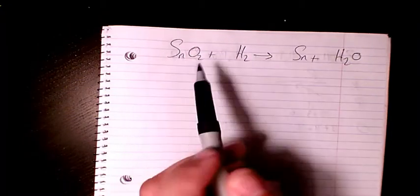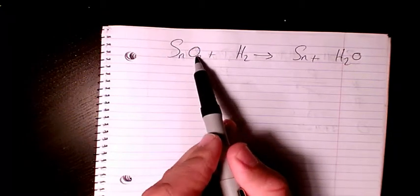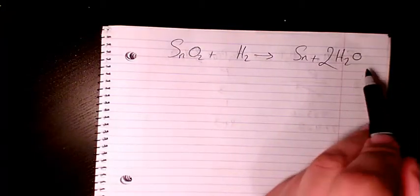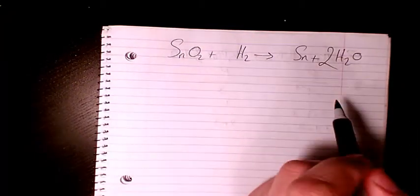We have one here and one here, so that's balanced. What about oxygen? We have two of oxygen, so I need to put two here. So the oxygen is balanced, tin is balanced.